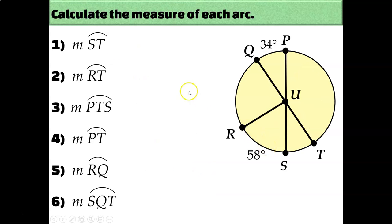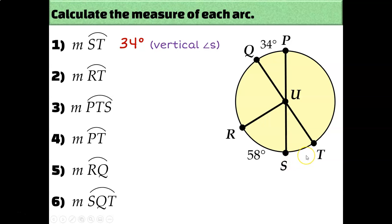Let's try another example. The measure of arc ST is 34 degrees because of vertical angles. Since the arc labeled 34 tells us angle PUQ measures 34 degrees, and vertical angles are equal, the opposite central angle is also 34 degrees. Since a central angle equals the arc it intercepts, arc ST is also 34 degrees. Then arc RT equals 58 plus 34, which is 92 degrees.